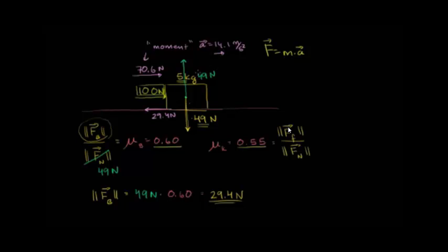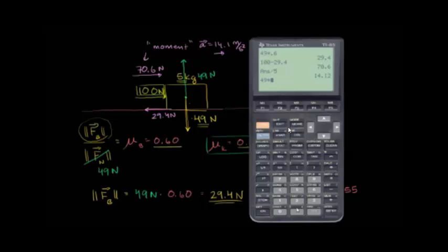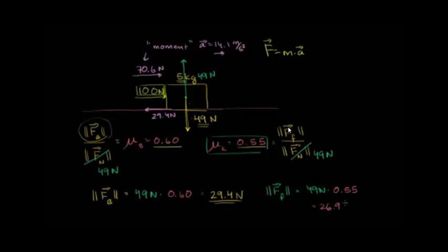But that's just for that absolute moment, because once the block starts moving, the coefficient of kinetic friction takes over. We've gotten the surfaces out of their grooves, and they're now gliding past each other — though there's still resistance. The force of kinetic friction, always acting against our motion, is 49 Newtons times 0.55, which equals 26.95 Newtons.